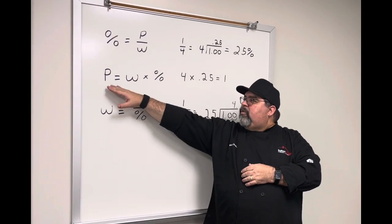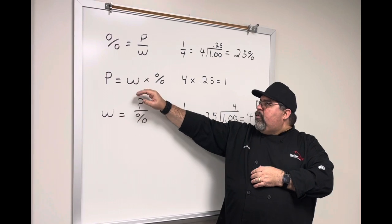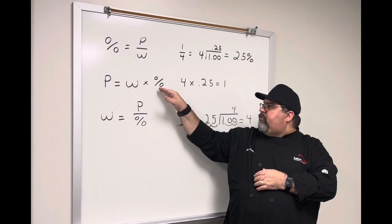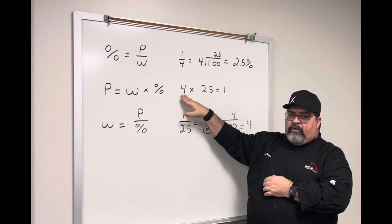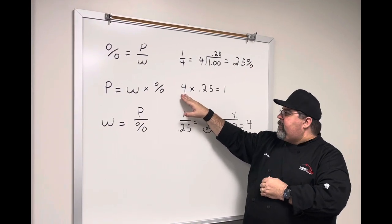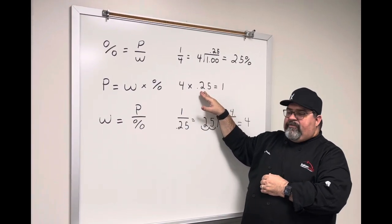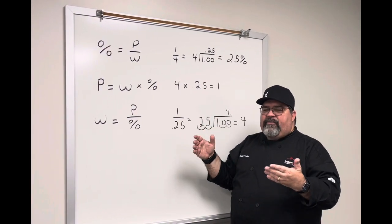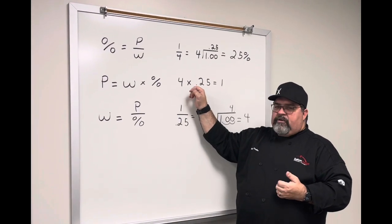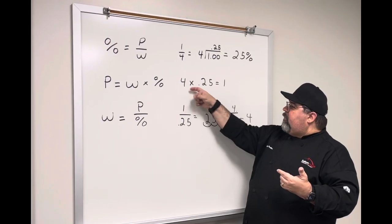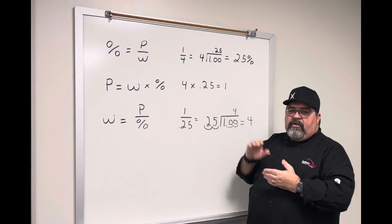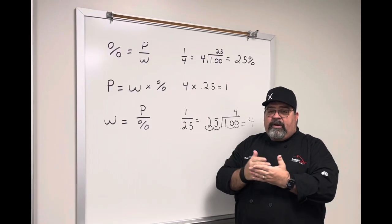If we're looking for the part but we know the whole and the percent, we can use the same math problem. Four is the whole. We have .25 as our decimal percent. We do 4 × .25, which gives us the answer of 1. So 1 is our part.